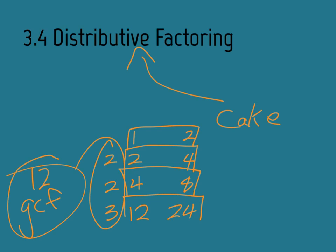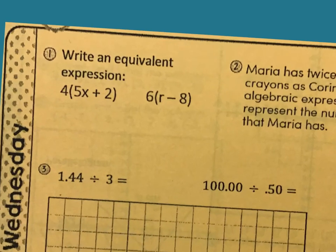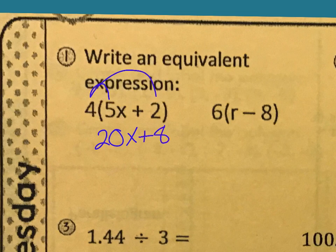So let's go through your bell work first. We are writing an equivalent expression on number one. We're going to be using the distributive property to write an equivalent expression. So what we're going to do is 4 times 5x, which is 20x. And then 4 times 2 is 8. This is an equivalent expression. So not very difficult.